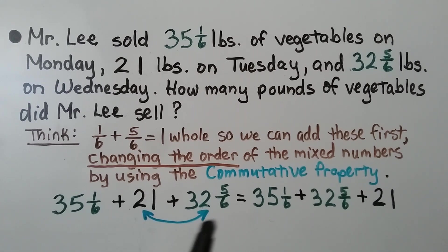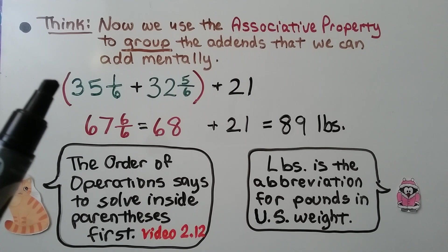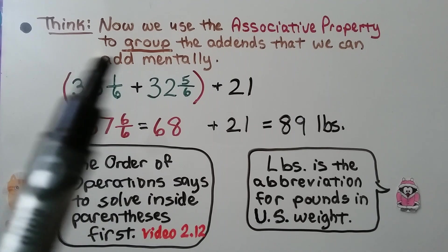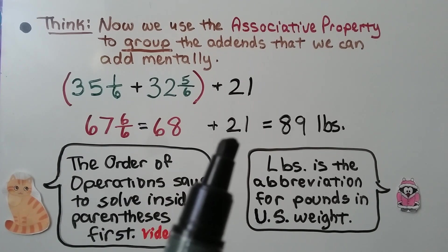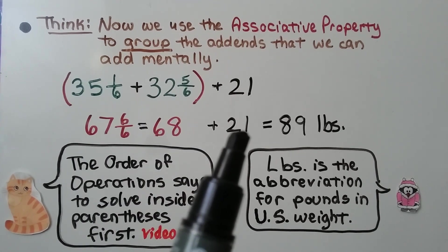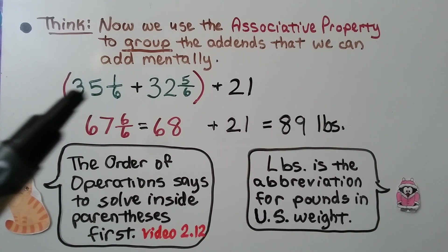We change the order of the addends to put the compatible fractions together. Then we use the associative property to group the addends we can add mentally. We have 1 sixth and 5 sixths, which equals 6 sixths. We have 35 and 32, which equals 67. And 67 and 6 sixths equals 68. Now we add 21 using mental math: 2 tens and 6 tens is 8 tens, and 8 ones and 1 one is 9 ones. We have 89 pounds. Note: 'LBS' is the abbreviation for pounds in U.S. weight.